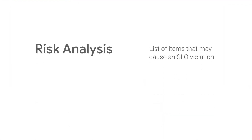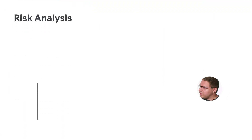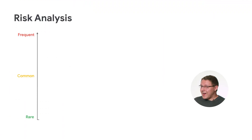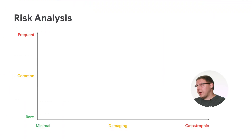A risk what? An analysis of what items or risks that might cause you to not meet your SLO. I see — I know all the ways that my system has failed in the past, and I can think of many different ways that my system might fail in the future. But how does that help me figure out if my error budget is realistic? So you need to figure out how often each failure is likely to happen and how severe it will be if and when it happens.